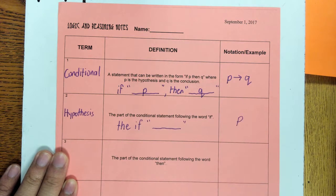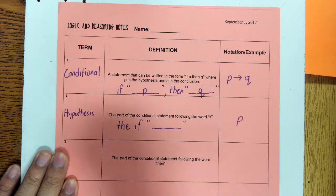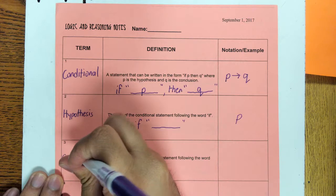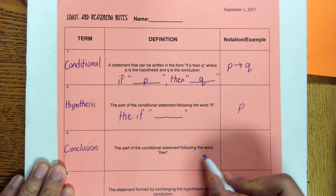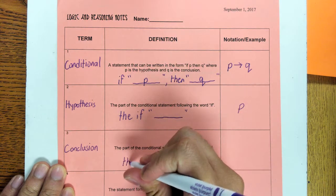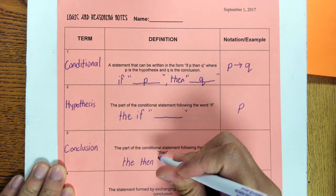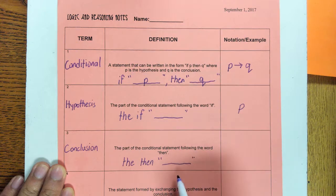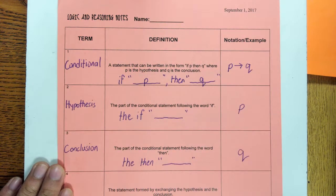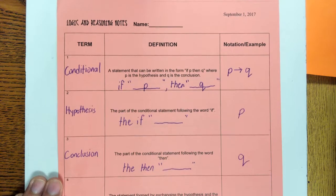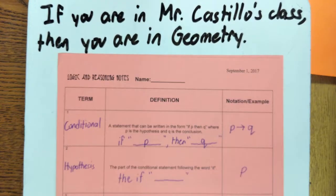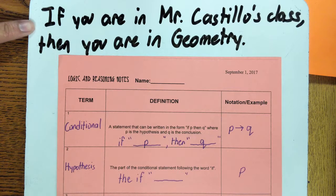Just like in science — in an experiment you start with a hypothesis, do the middle steps, and at the end you reach a conclusion. The conclusion is the part of the conditional statement following the word 'then.' It is the 'then blank' part — that is our Q. Here is an example of a conditional statement: if you are in Mr. Castillo's class, then you are in geometry.